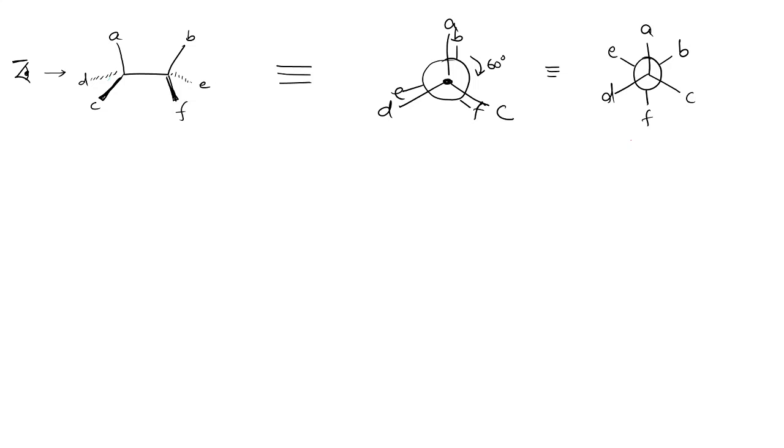So you can draw this eclipsed conformation or staggered conformation. You should notice how one uses the word conformation, configuration and projection. So what are projections? Wedge and dash is a kind of projection, Newman is a kind of projection, and then Fischer projection you have and also sawhorse projection. These are the ways in which we can draw the molecule.